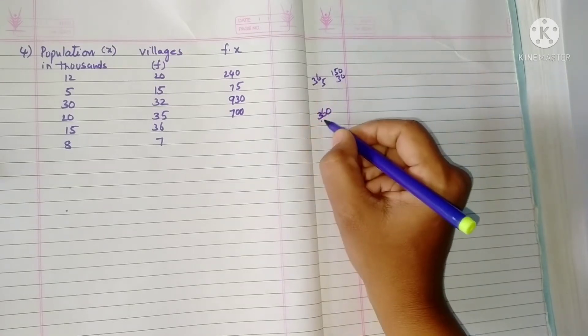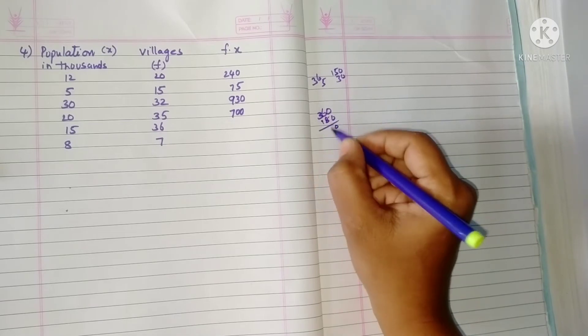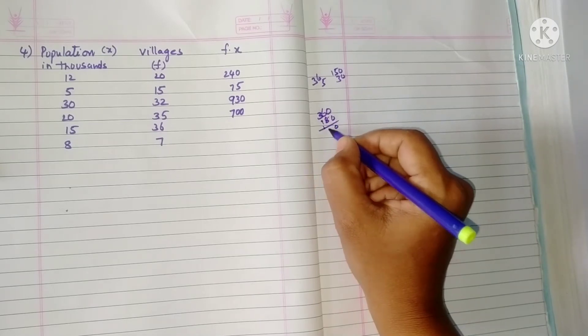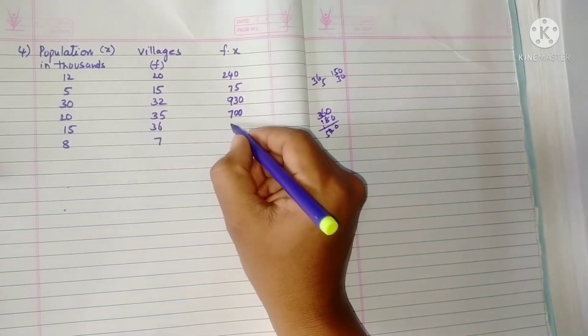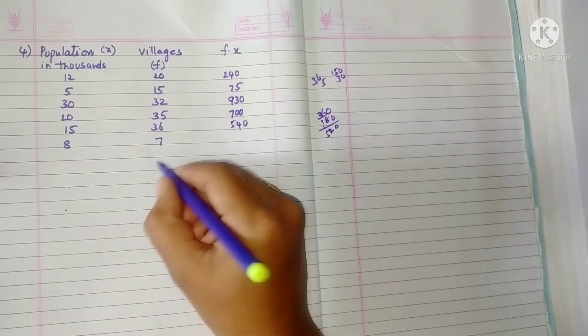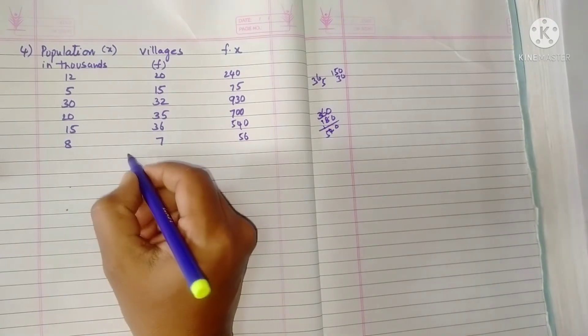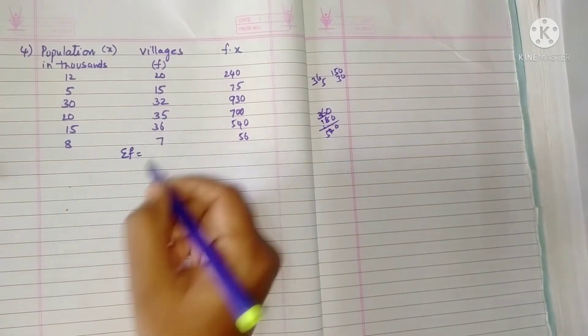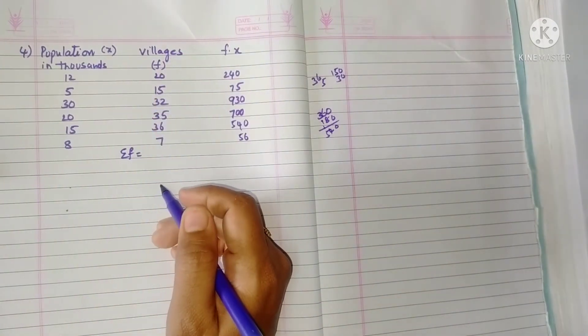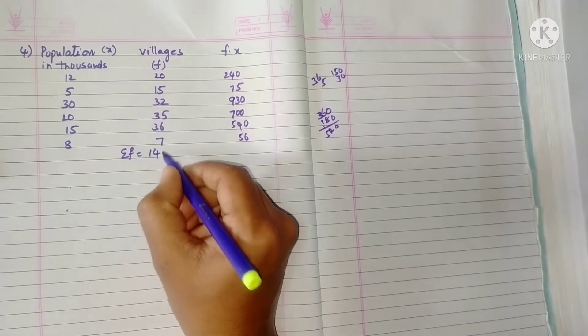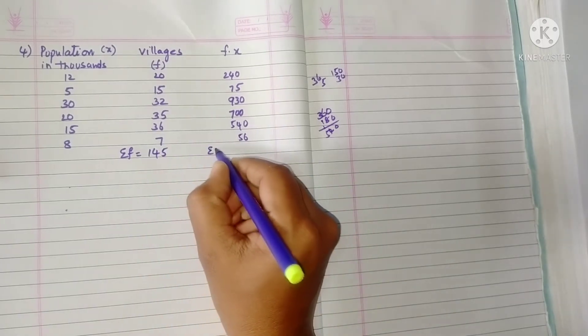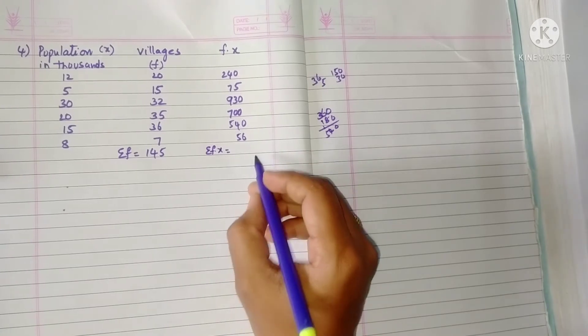30 times 6 is 180. So after adding we'll get it as 540 total. Now we want to find out sigma f. If we add all these we'll get 145.